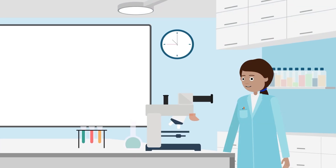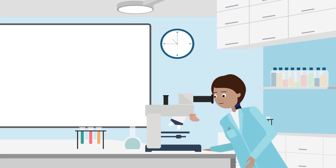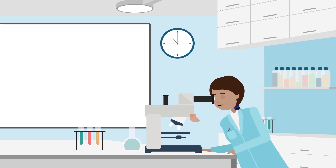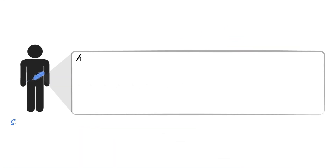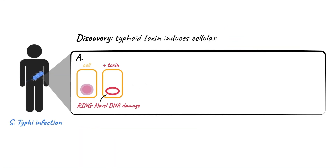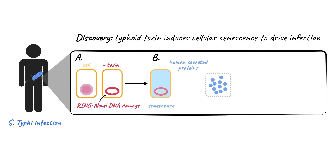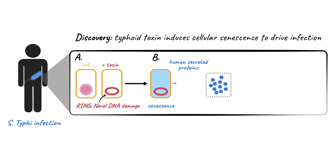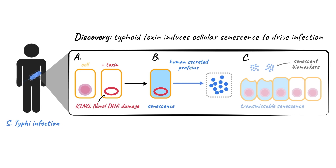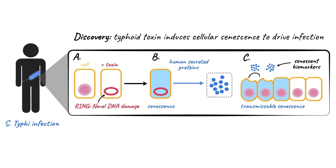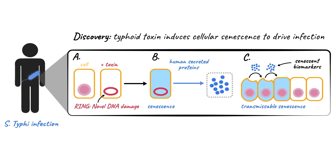The Humphreys lab have been looking at how typhoid toxin hijacks our cell biology. Typhoid toxin damages DNA and accelerates cellular ageing via senescence, rendering human cells more susceptible to infection.